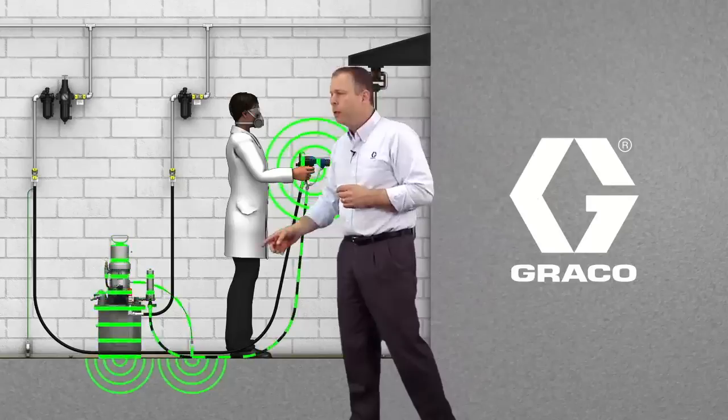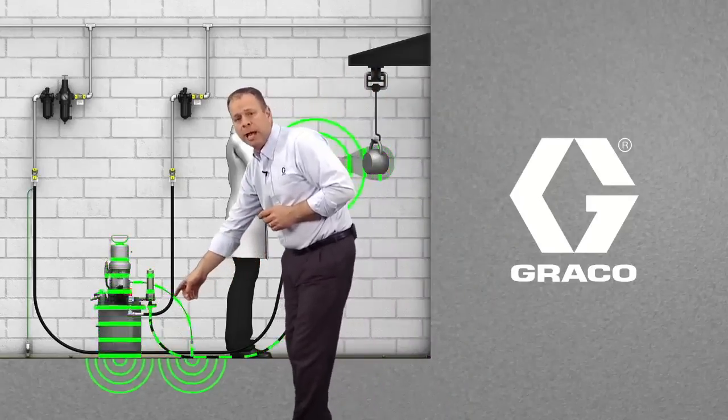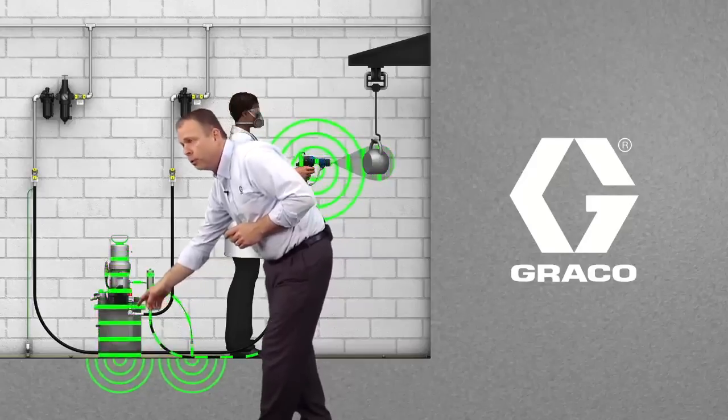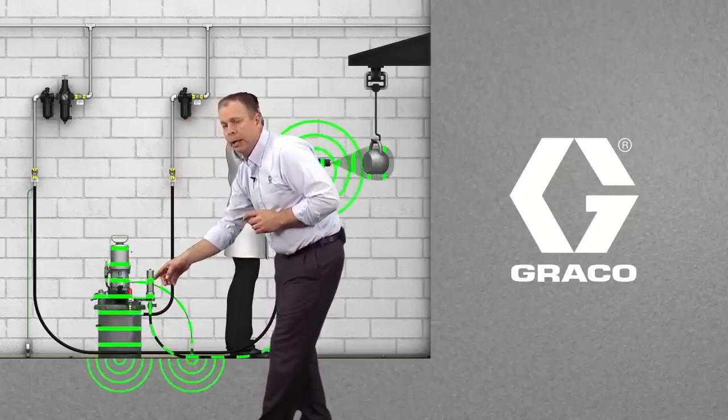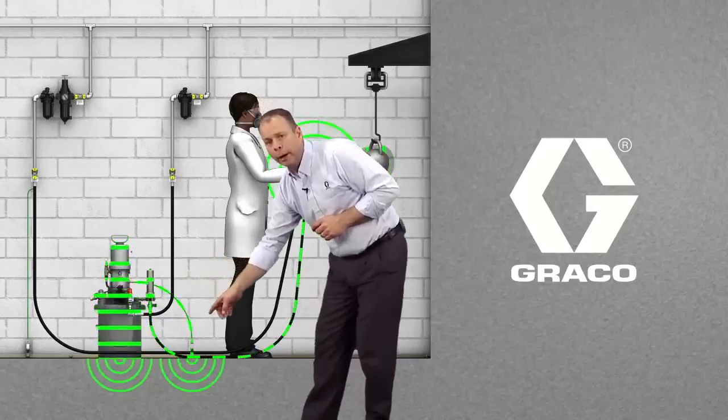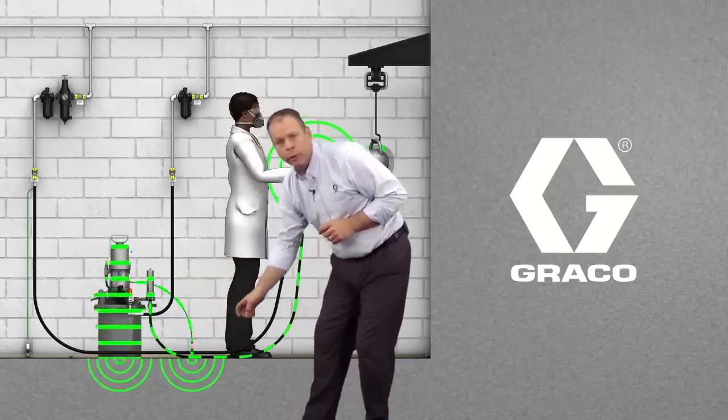There's two grounding points here. The first one, because this is a metallic pail, is through the pail itself to the surface or to the ground. The next point is going to be an actual ground wire from the pump to the true earth ground.